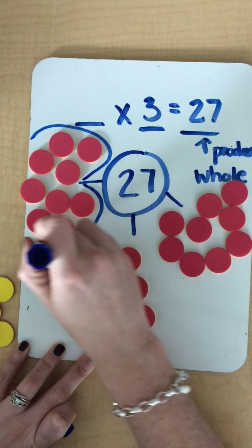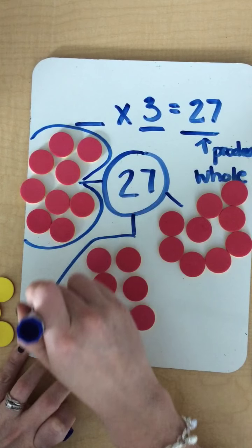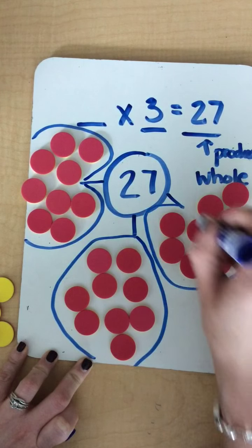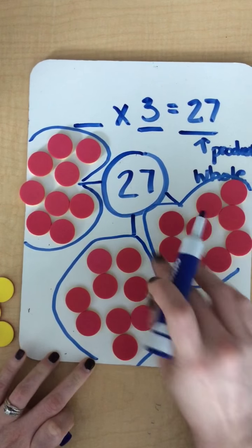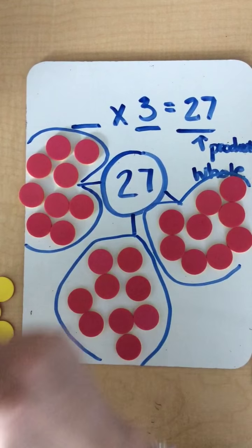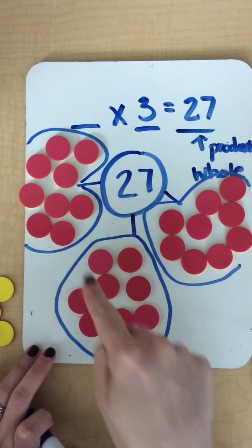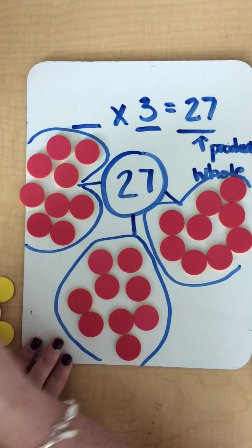So here's one group, here's another group, and my third group. I want to notice that I have 27 in the middle. I have three groups, 1, 2, 3, and now I have to figure out how many is in each group. So I would count each one of those.